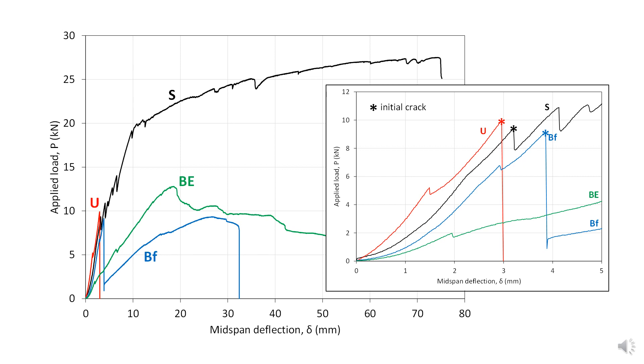Looking in detail at the applied load versus deflection curves and zooming in on the initial portion of those curves to illustrate the initial cracking, we see that there is no expected change in cracking capacity of these girders. Reinforcement has little impact on the initial cracking loads.